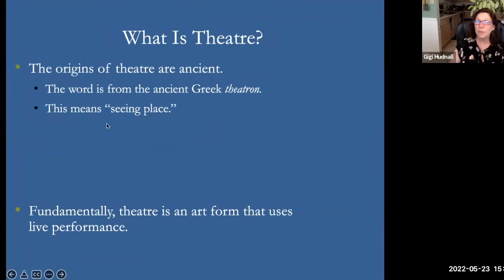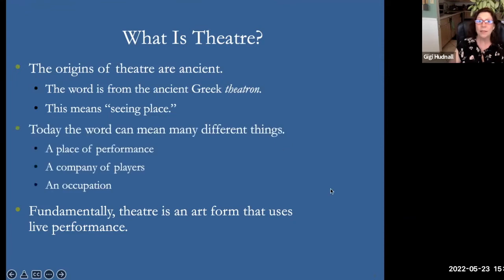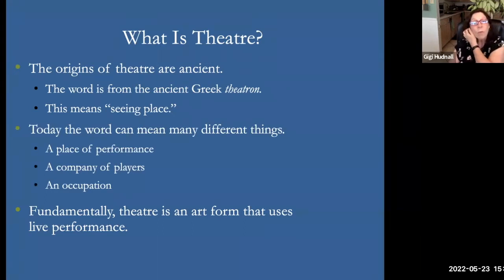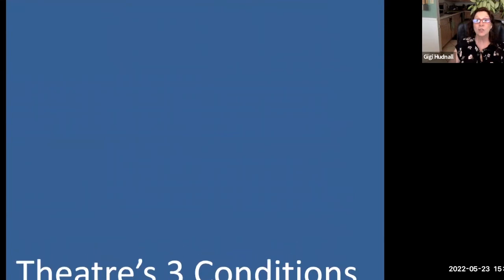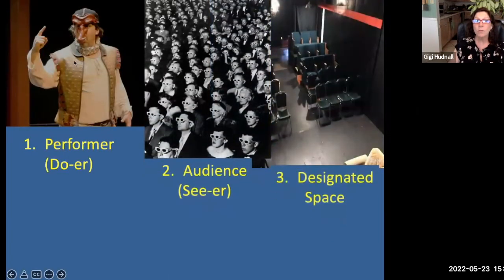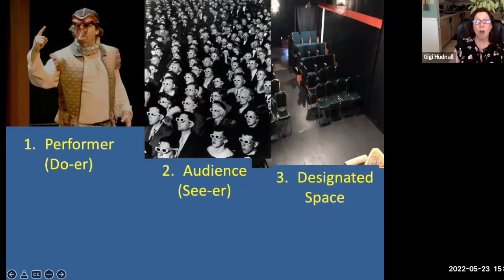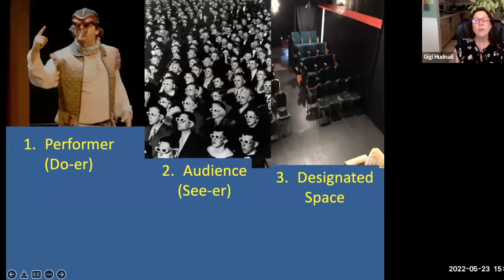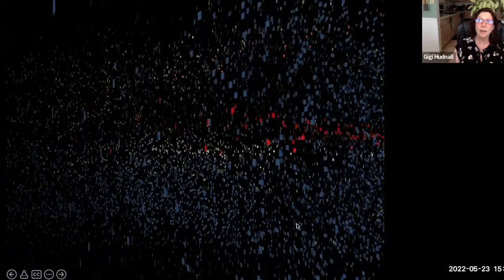The origins of theater are ancient. The word comes from the Greek 'theatron,' meaning seeing place. Today it can mean a place, a performance, a company of players, or an occupation. Fundamentally, theater is an art form that uses live performances — people who are really there. Theater needs three conditions to exist: a performer (a doer), an audience (a seer), and a space where the performing happens. If someone performs by themselves with no audience, it's not theater.